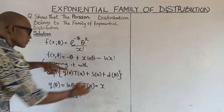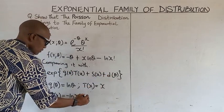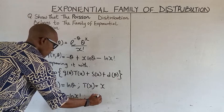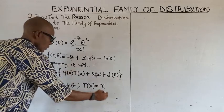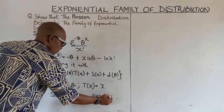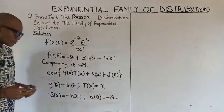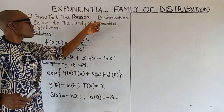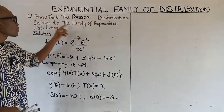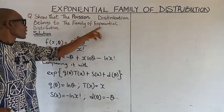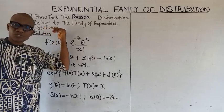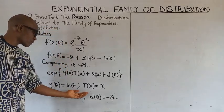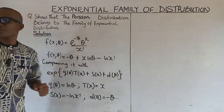We also have V(θ), which is negative theta. This shows that the Poisson distribution belongs to the exponential family of distribution. When we are able to show this, then we are done.